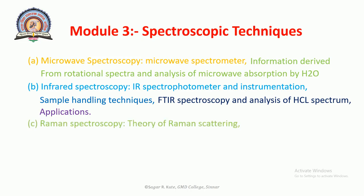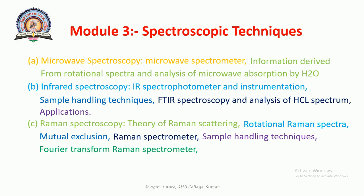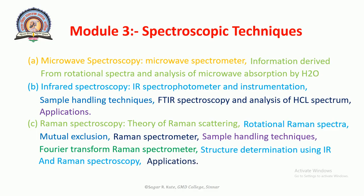Third is FTIR Spectroscopy, Analysis of the HCl Spectrum and its Applications. Also in module three, Raman Spectroscopy: Theory of Raman Scattering, Rotational Raman Spectra, Mutual Exclusion Rule, Raman Spectrometer, Sample Handling Techniques, Fourier Transform Raman Spectrometer, and Structure Determination using IR and Raman Spectroscopy and their Applications.